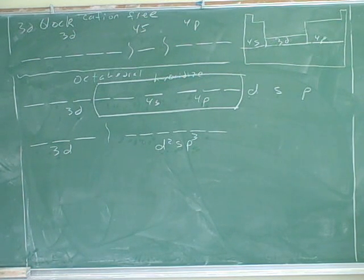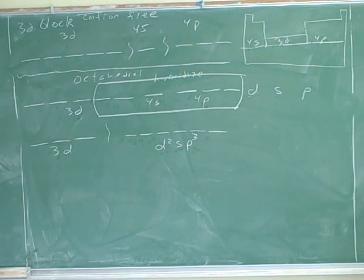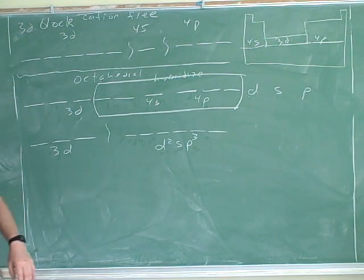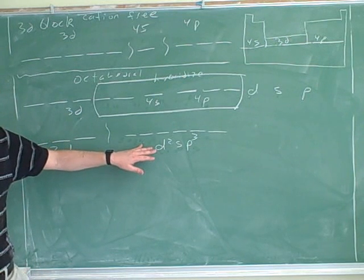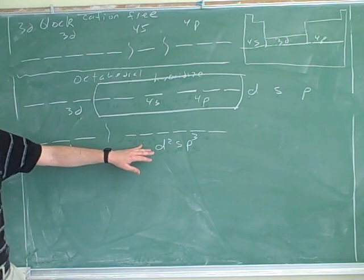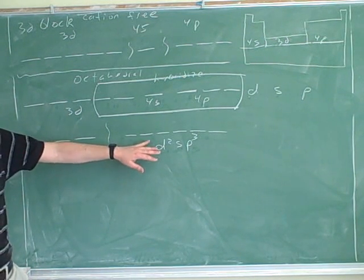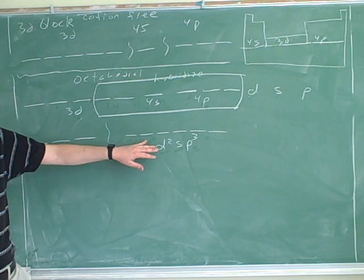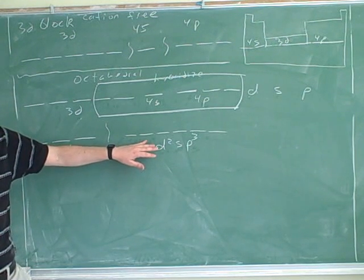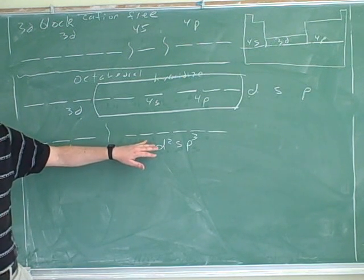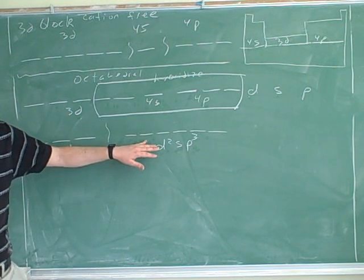This is not crystal field theory. In crystal field theory, we model everything as ionic — only the ligands have the electrons and the transition metal has none. But in the covalent model, we imagine the transition metal sharing the electrons with the ligands. These will start with some of the electrons the transition metal started with, and then be filled with other electrons from the ligands, forming covalent shared bonds.